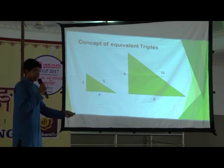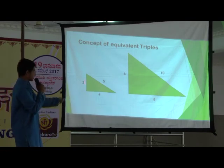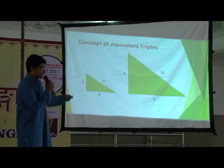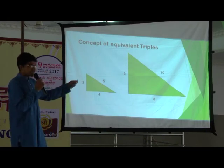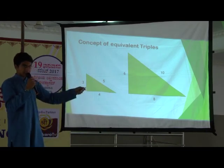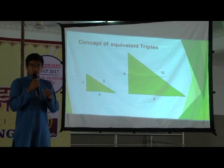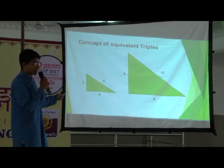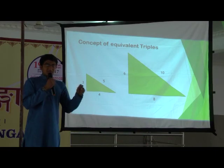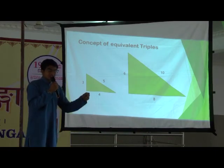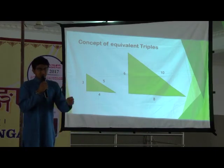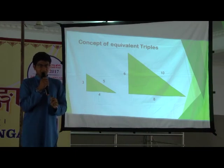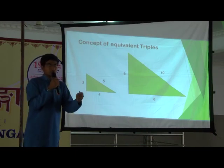That is how we name it: first the base, then the height, and finally the hypotenuse. So we'd have a 4, 3, 5 triangle and an 8, 6, 10 triangle. The first thing we notice is they are similar, because they have the same angles. So these triples — 4, 3, 5 and 8, 6, 10 — are called similar equivalent triples, the same way as equivalent fractions.